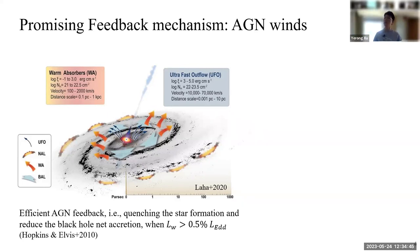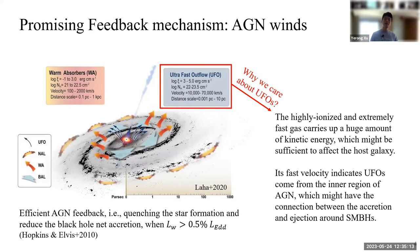According to simulations, to have efficient AGN feedback — meaning it could quench star formation and reduce black hole accretion — winds must have a kinetic energy power at least larger than 0.5% of the Eddington luminosity. I'm particularly interested in UFOs. The reason is that, as the name states, they have ultra-fast velocity and are usually highly ionized. This kind of outflow could carry a huge amount of kinetic energy, which might be sufficient to affect the host galaxies. In addition, its fast velocity indicates UFOs should come from the inner region of the accretion disk, which might reveal connections between accretion and ejection close to supermassive black holes.